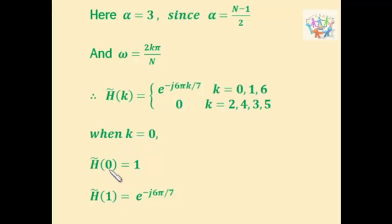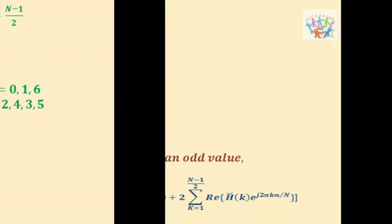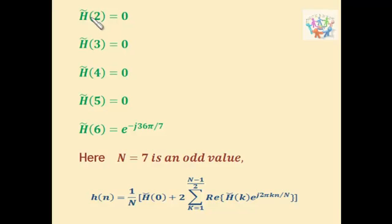Substituting k equal to 0, we get H̄(0) equal to 1. Substituting k equal to 1, we get H̄(1) equal to e^(−j6π/7). For k equal to 2, 3, 4, and 5, H̄(k) is 0. For k equal to 6, substituting gives H̄(6) equal to e^(−j36π/7).